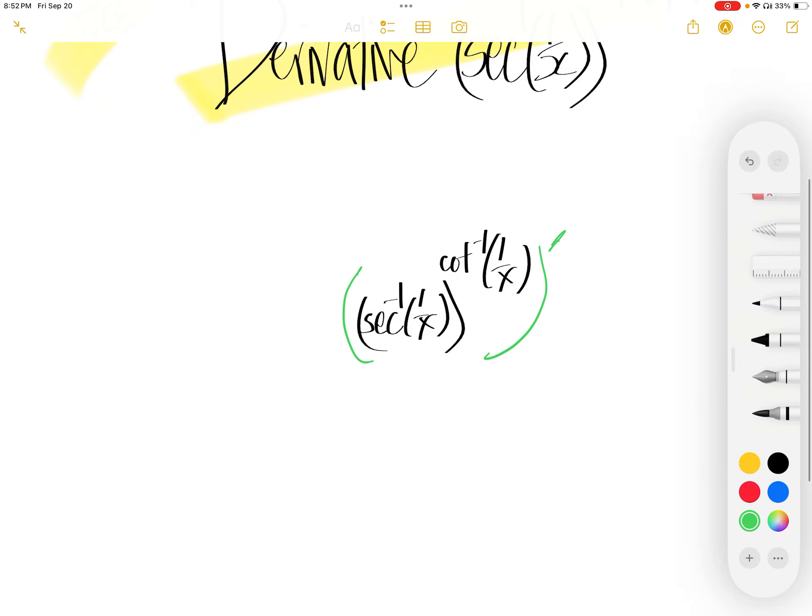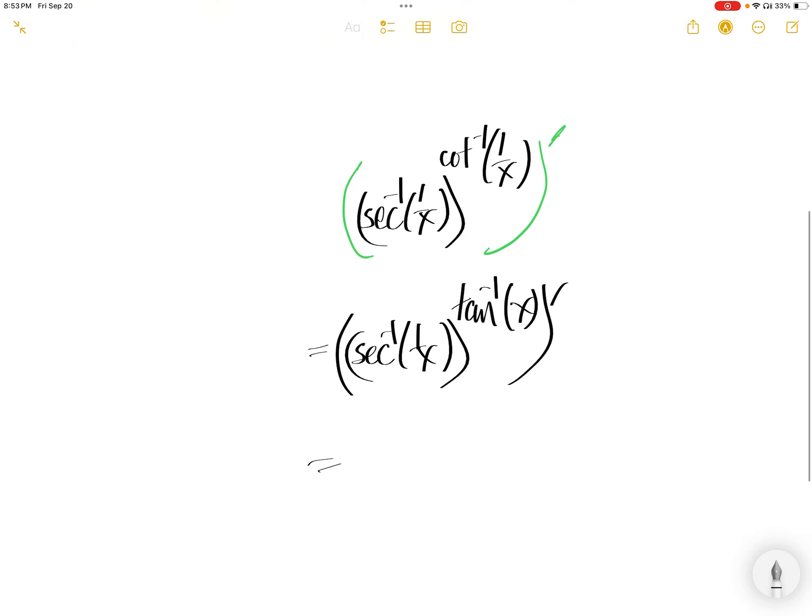Okay, before that let us rewrite arcsec 1 over x. arccot 1 over x is the same thing as arccot of x. And then write the arcsec 1 over x as arccot of x to the power of arccot of x.